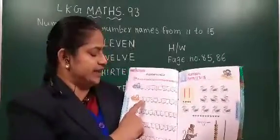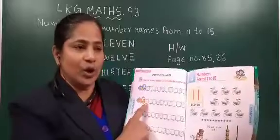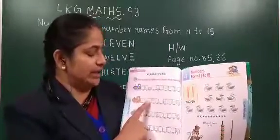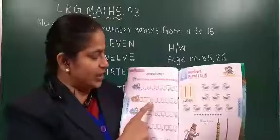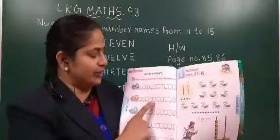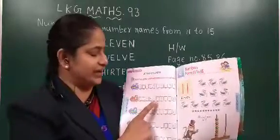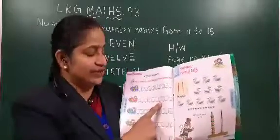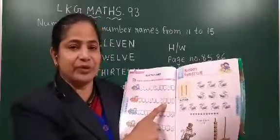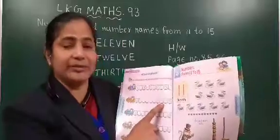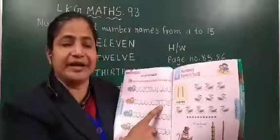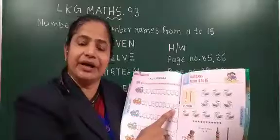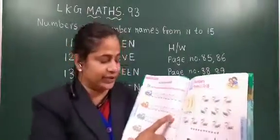Now second set: one is already given. One ke baad two likhna hai, three likhna hai. Now four diya hai. Four ke baad two numbers aapko likhna hai — five or six. Now seven diya hai. Seven ke baad konsa number ae ga? Eight. Eight ke baad nine. Or last number ten already diya hai.